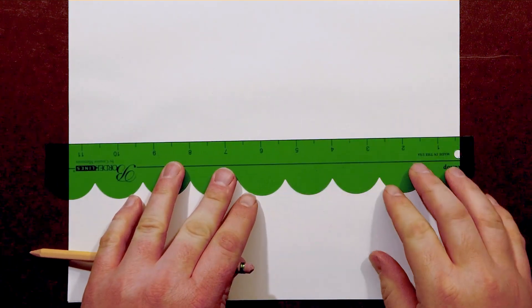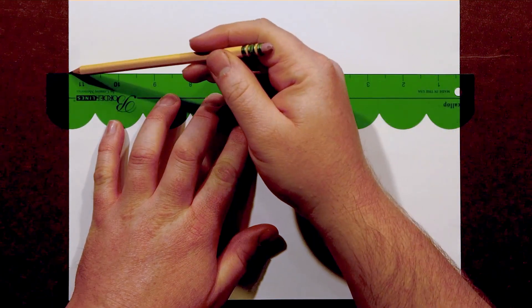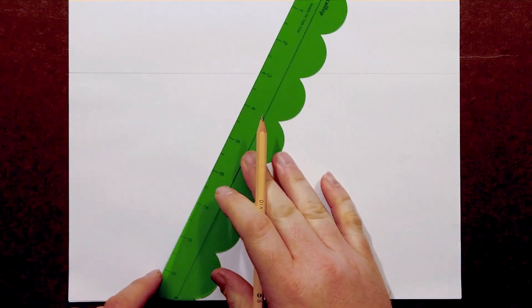As with all one point perspective drawings, we'll start by locating a horizon line. This one is near the top and it's horizontal. I'll place my vanishing point near the center.